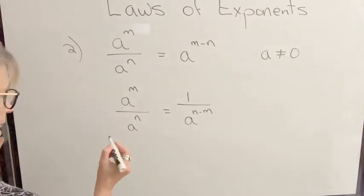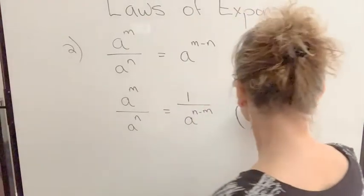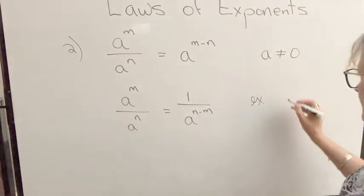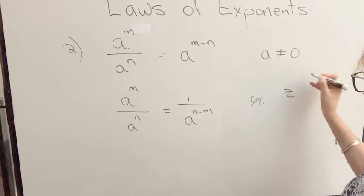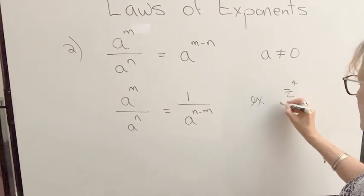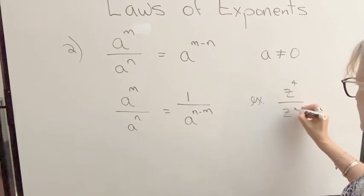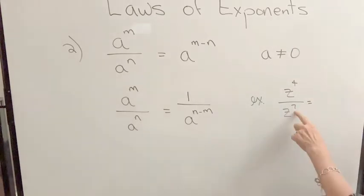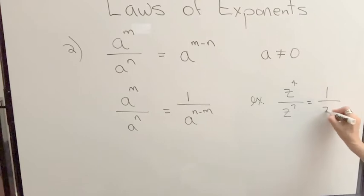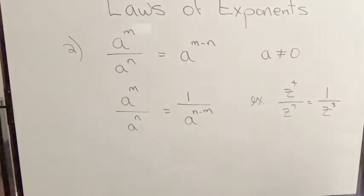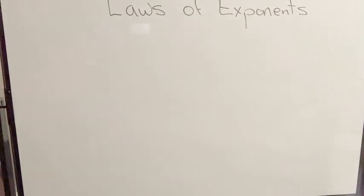So for example, if I have Z to the power of 4 divided by Z to the power of 7, because 7 is larger than 4, my result will be 1 over Z to the power of 7 minus 4, which is 3.